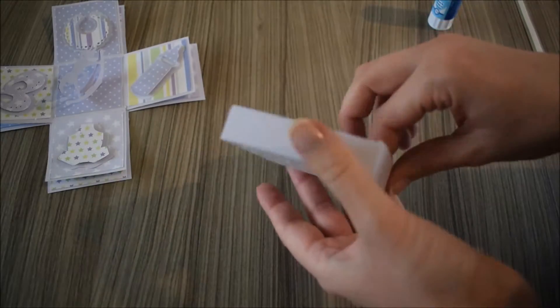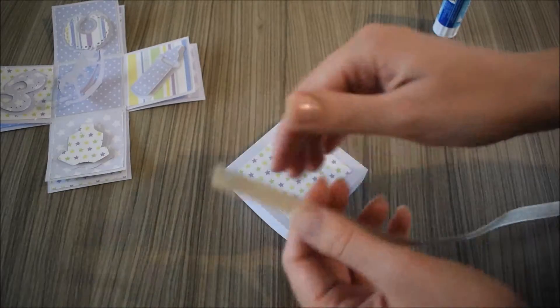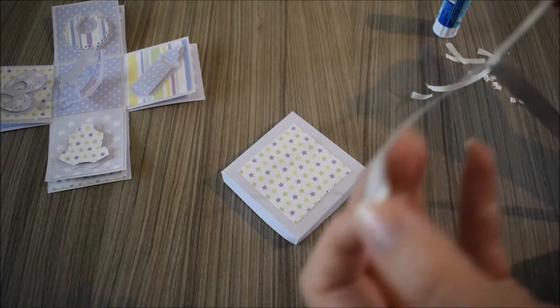Okay, that makes the lid. The final bit of decoration is just a little bit of ribbon around the top of the lid. So again, I've used double-sided sticky tape.